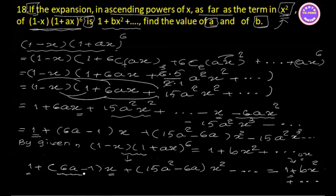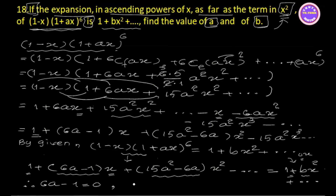So 6a minus 1 is equal to 0. Therefore 6a minus 1 is equal to 0. So 15a squared minus 6a is equal to b.